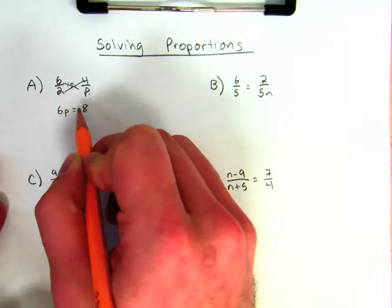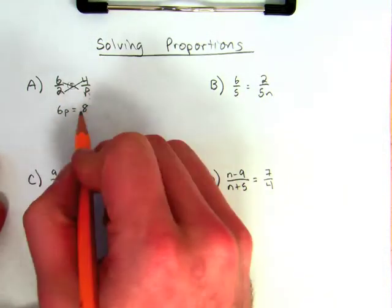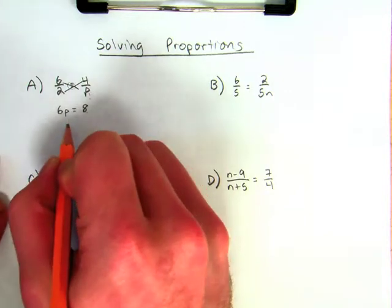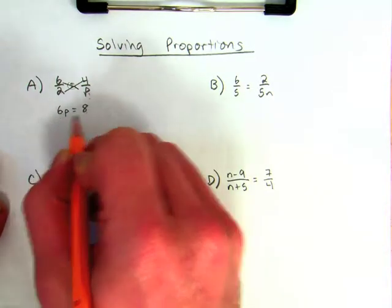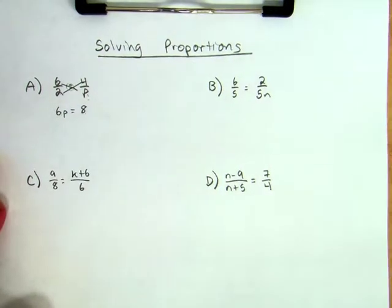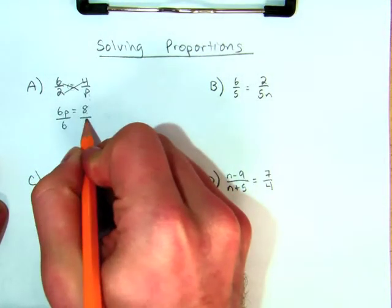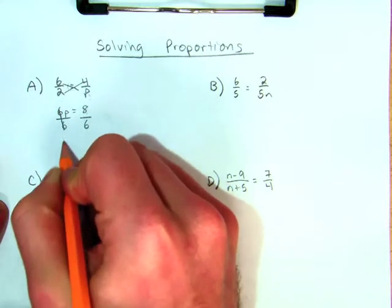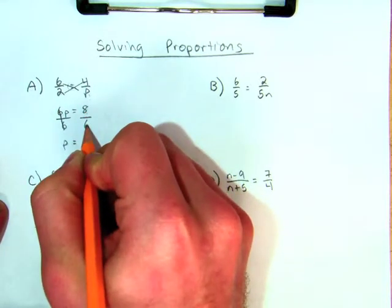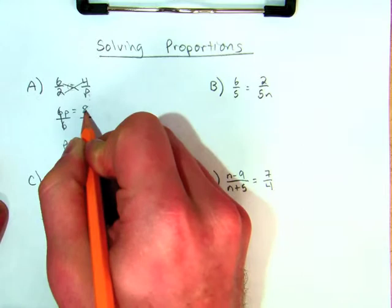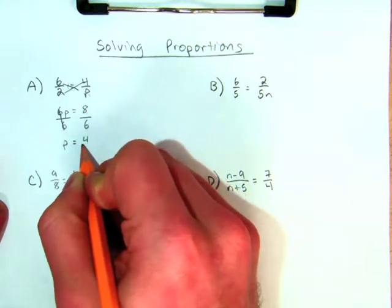It doesn't matter what order you go in. So 6P equals 8. I divide by 6 on both sides and I'm left with P equals 8 over 6. Now I need to reduce because I can't leave it as that. So that's going to reduce to 4 over 3.